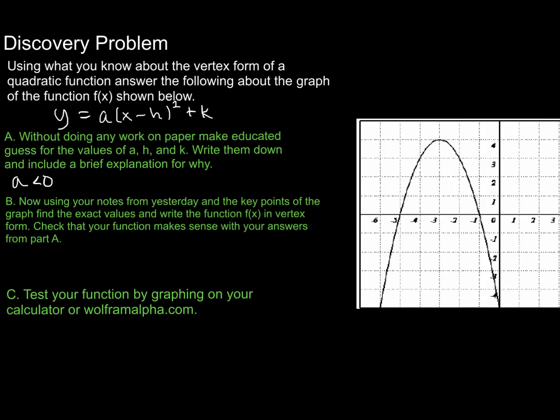H and K are easy: H is the X value of the vertex, which appears to be negative 3, and K appears to be 4. So H should equal negative 3 and K should equal 4, based off the vertex. Now let's go ahead and create this for ourselves. I'm going to move to the next slide so we can clearly detail the steps we're going to go through.